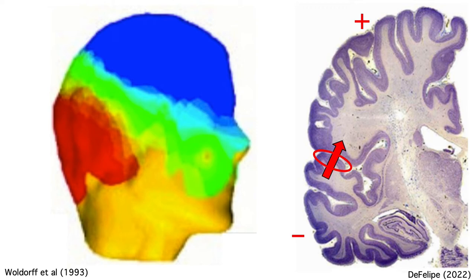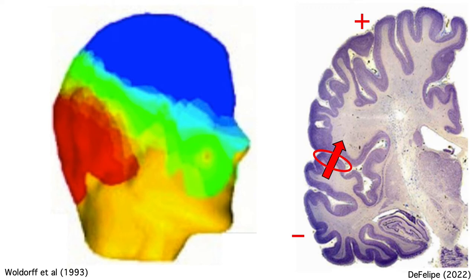Also, every component produces a positive voltage over one side of the head and a negative voltage over the other side. We might not have electrodes covering enough of the head to see both sides of the dipole, but both the positive and negative sides of a component are present somewhere on the head. So a component could be a P1 at one electrode and an N1 at another.